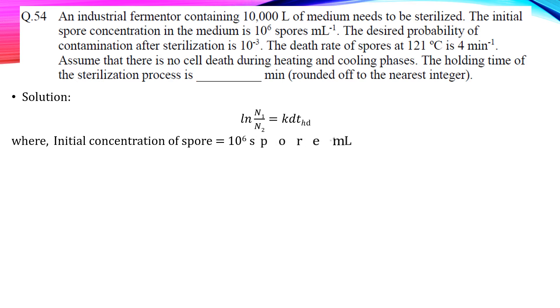Where N1 is the initial number of spores but we have given initial concentration of the spore. So to convert the concentration into the number we will multiply initial spore concentration with the tank volume. And that will give us 10 to the power 13.